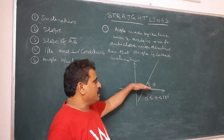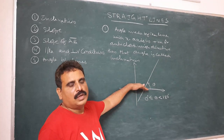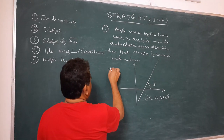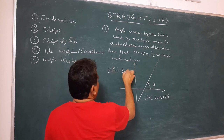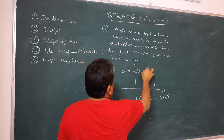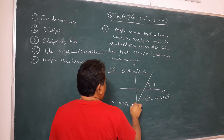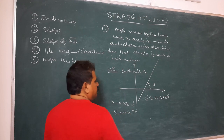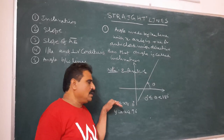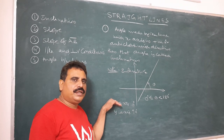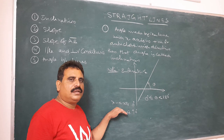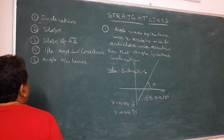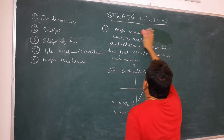The inclination of the x-axis is 0°. The inclination of the y-axis is 90°. Any horizontal line has inclination 0°, and any vertical line has inclination 90°.